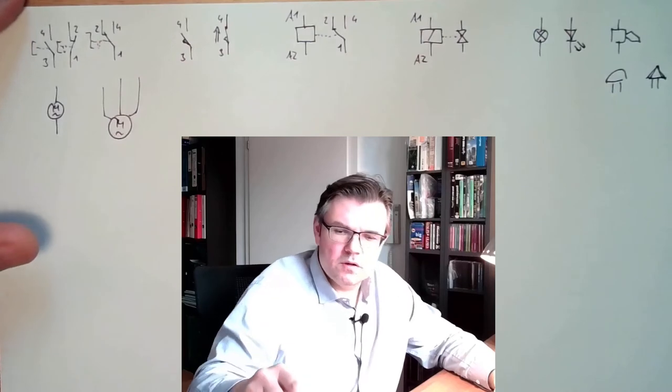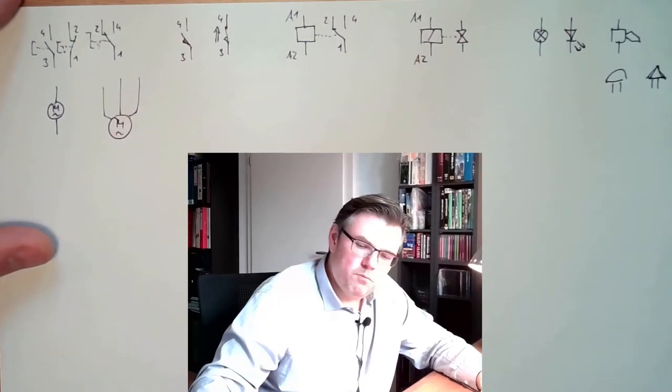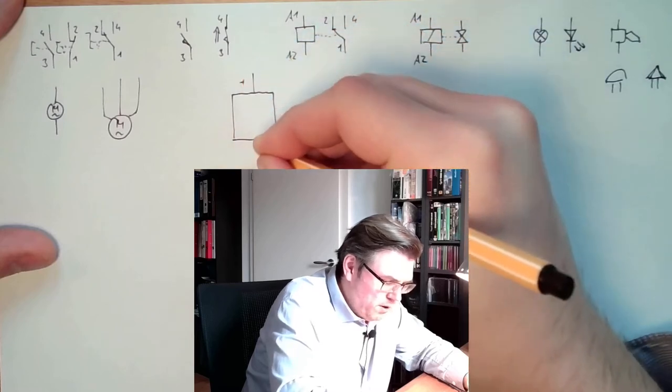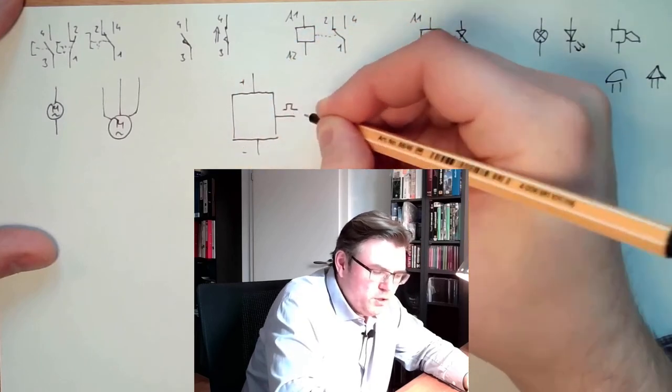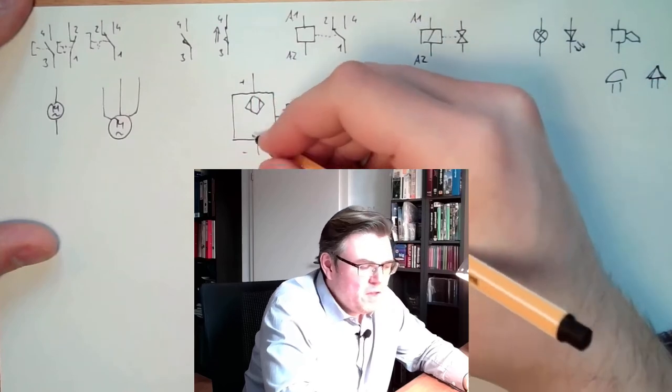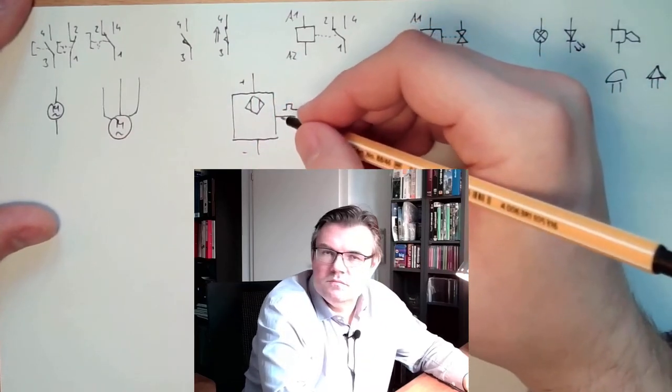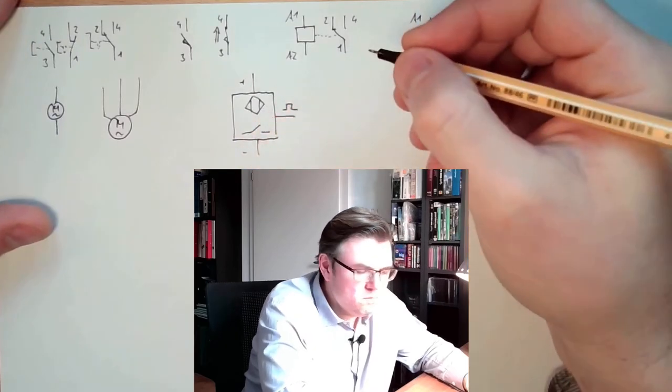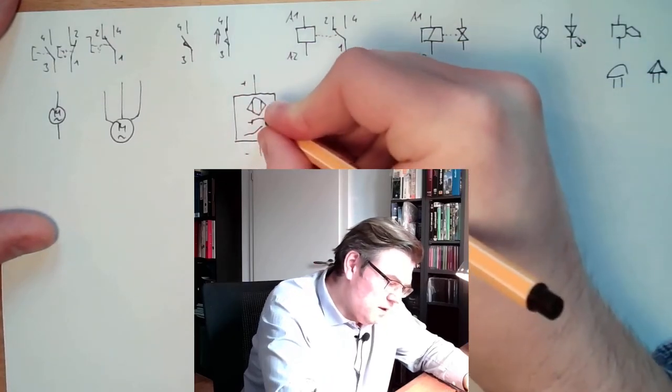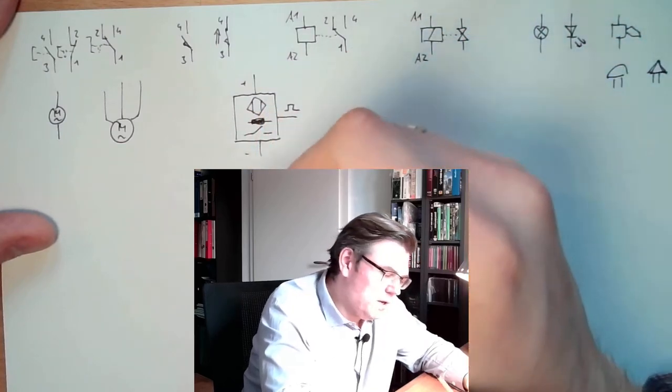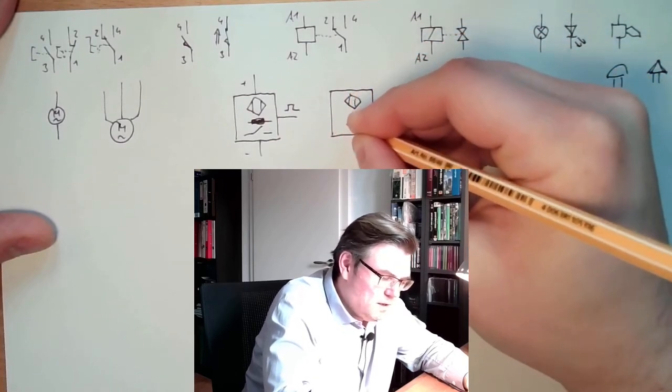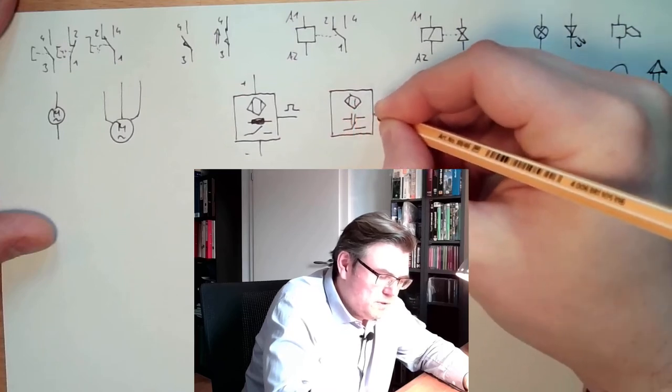And there are also proximity switches, which usually look something like this. There is usually power supply, plus and minus, and there is the switching output of those. And the limit switches usually have this sign inside. If I want to draw that it is inductive, I will make it an inductivity. And if I want to draw it as a capacitive limit switch, I will draw a capacitor inside.